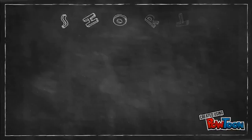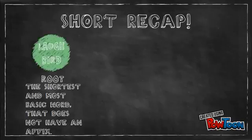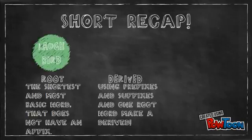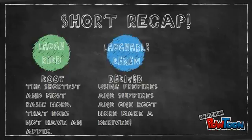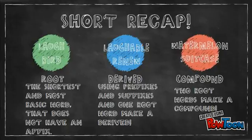Now let's do a really short recap. The root is the shortest and most basic word, like laugh and bird. Derived uses prefixes and suffixes and one root word, like laughable and renew. Compound uses two root words, like watermelon or suitcase.